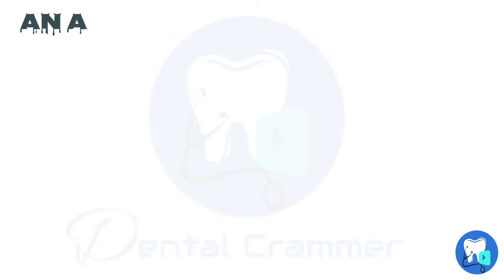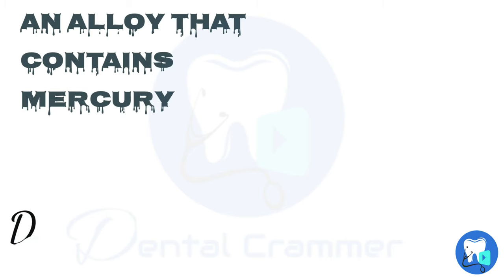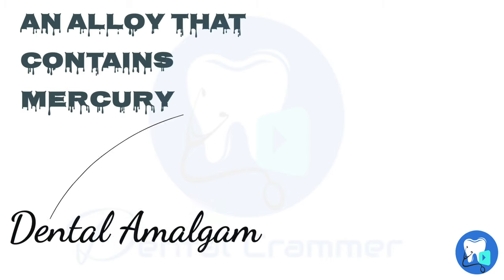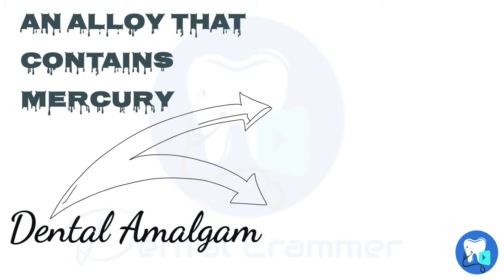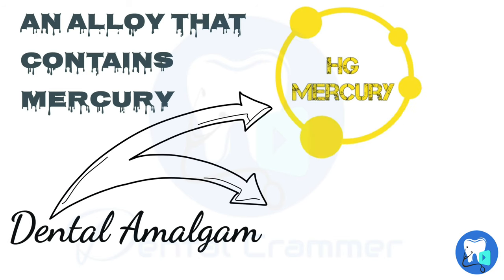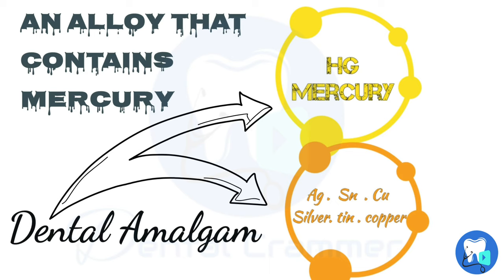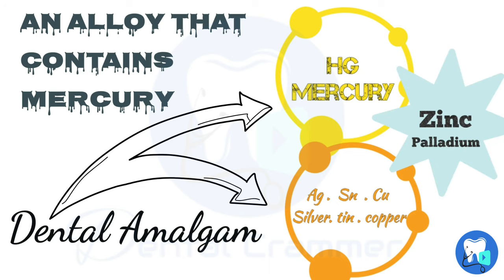The simplest definition of amalgam would be an alloy that contains mercury. Dental amalgam is an alloy that is formed by reacting mercury with silver, tin, and copper. Zinc and palladium are added to improve the handling properties.